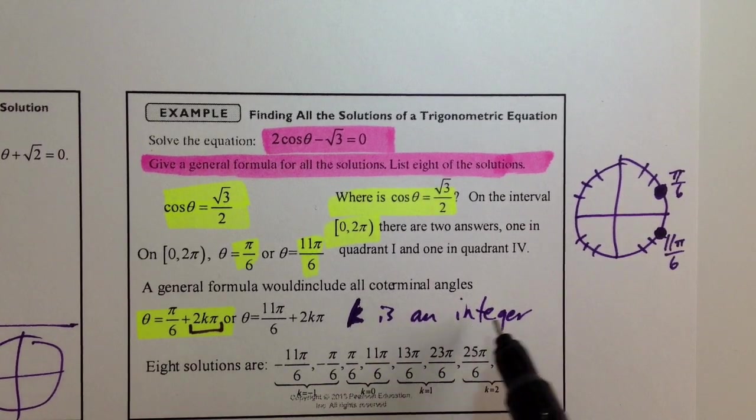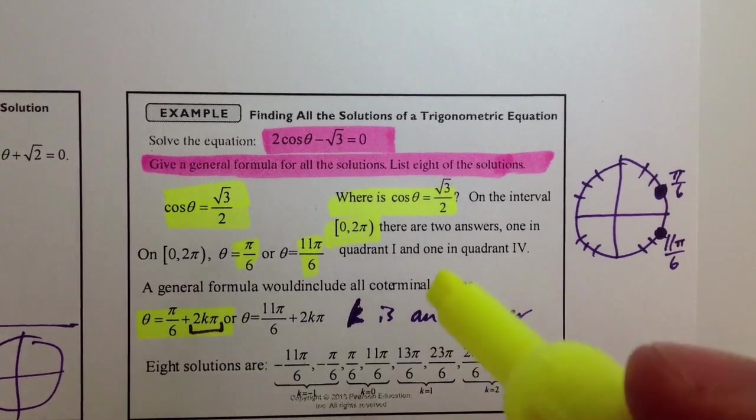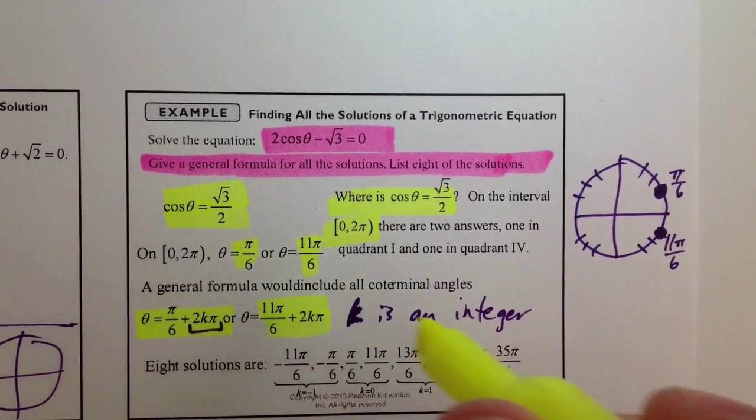counting by 1. So, negative 3, negative 2, negative 1, 0, 1, 2, 3, 4, and so forth. And then, we have 11 pi over 6 plus 2k pi.